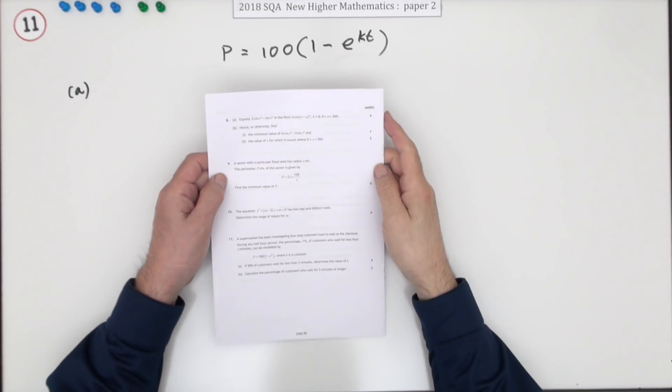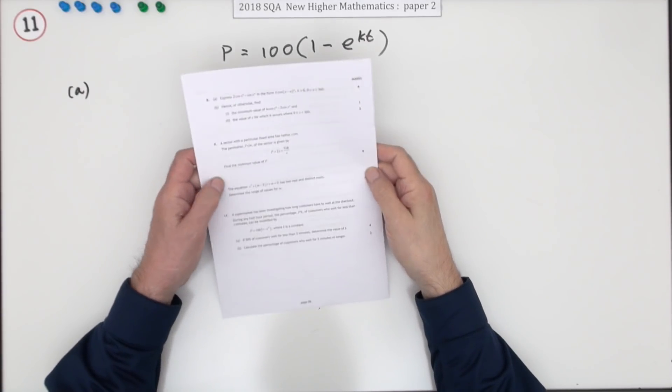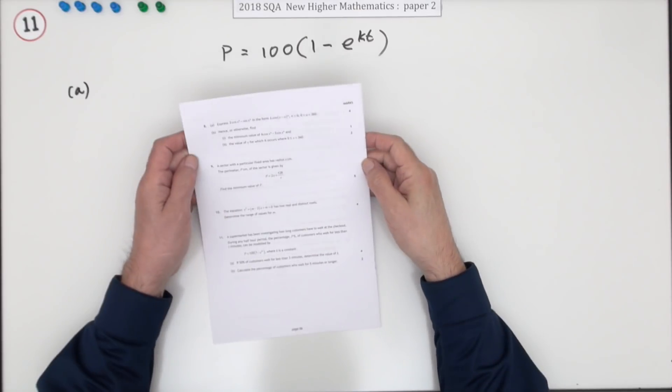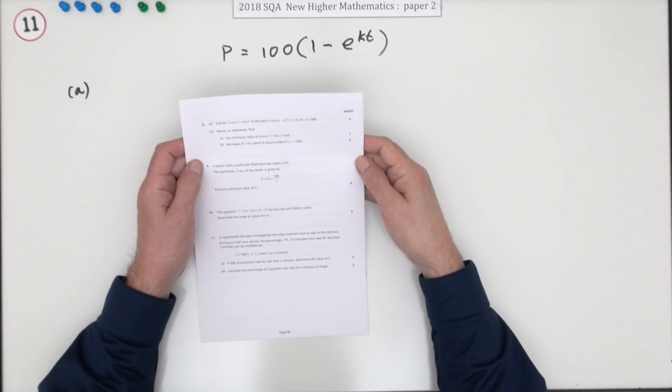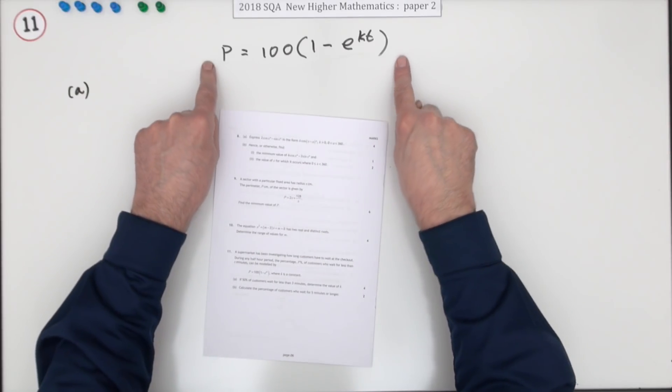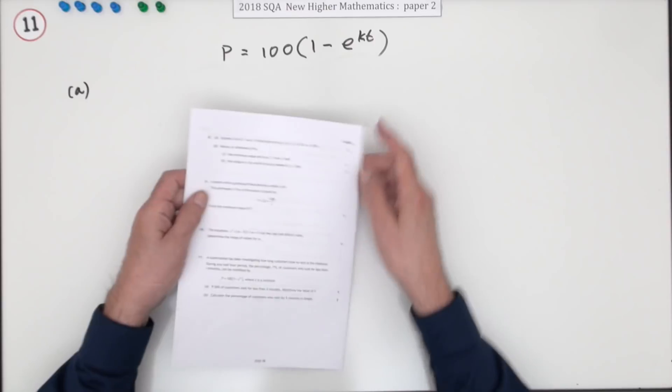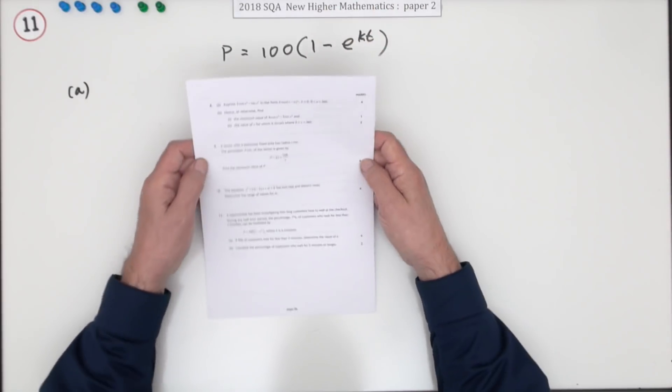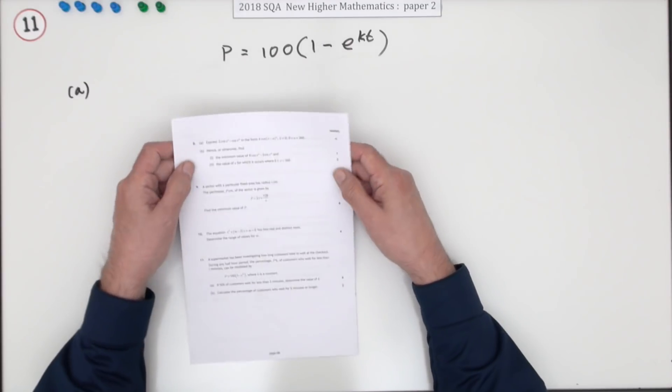Number 11 then, from the 2018 SQA Higher Maths Paper 2. Six mark question on these exponential equations here, these growth decay equations. Yes, it involves logs, but suppose that's when it involves logs in its less scary form, because you're only using log really to get rid of e, using log as the inverse of the exponential function.